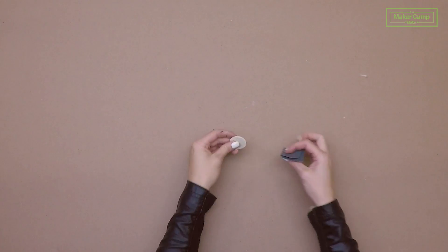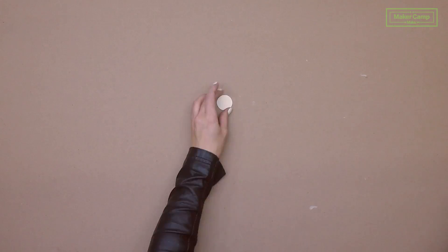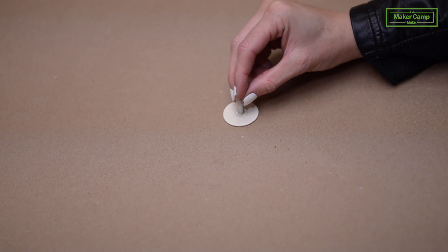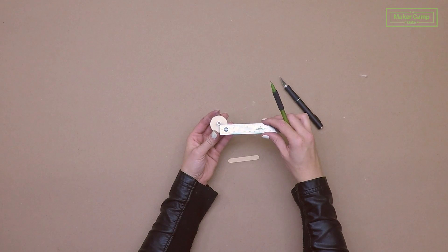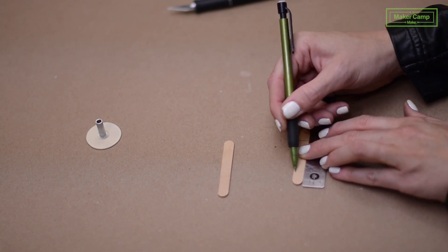Now we're going to make our ball spinners. Lightly sand your craft wood. Use some hot glue and attach your three quarters inch aluminum spacer. Measure out from the center of your aluminum spacer to the edge of the craft wood. Ours are about a quarter of an inch.